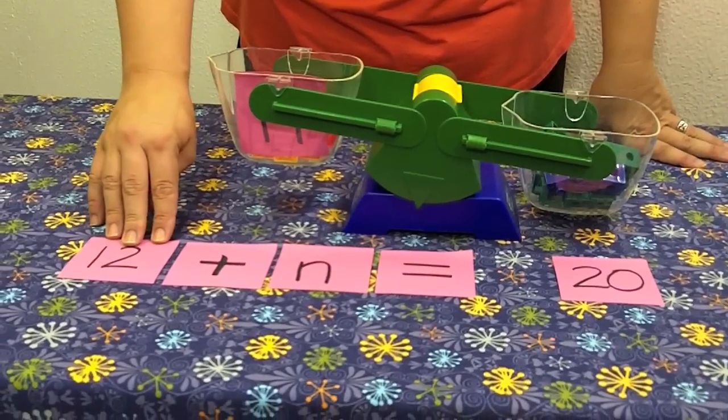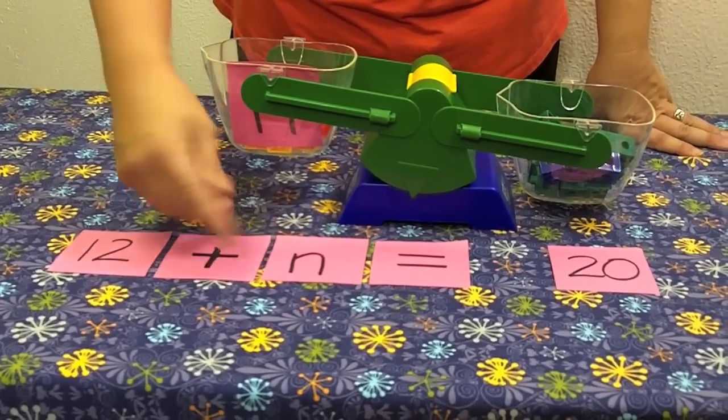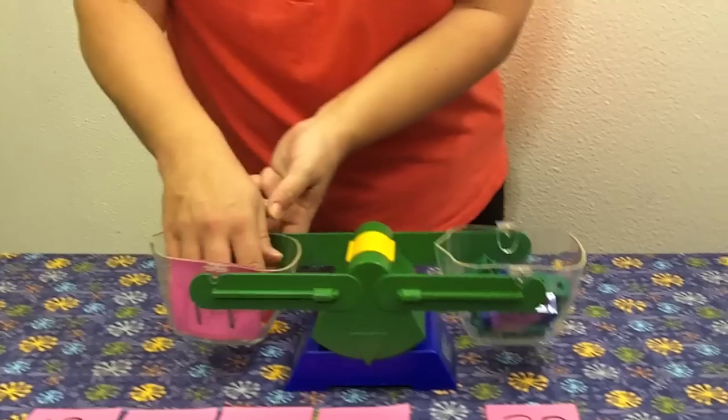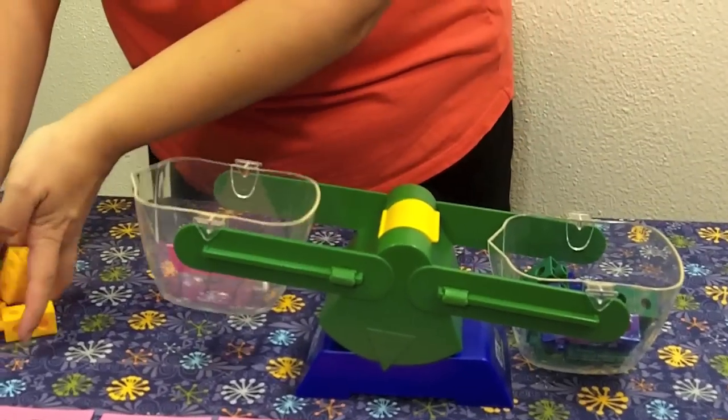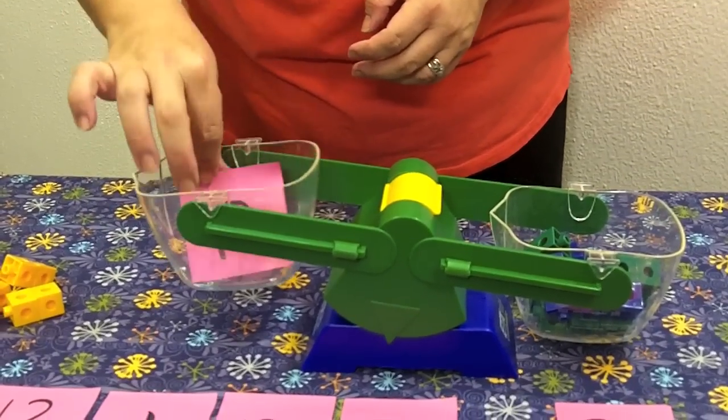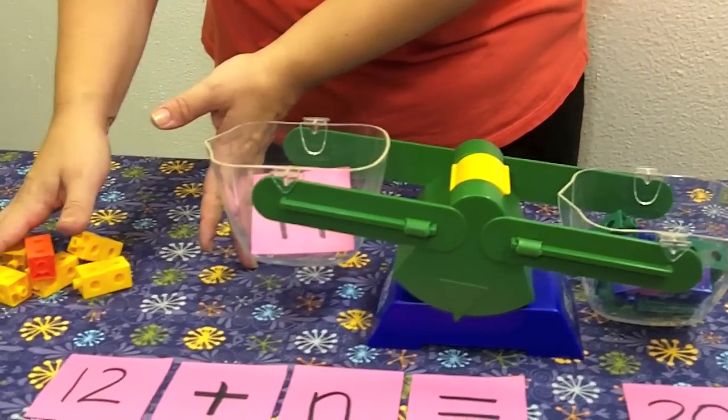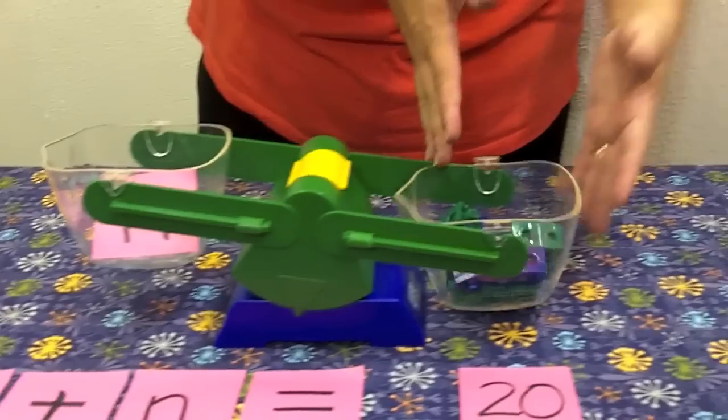This means that if I have 12 here, the only way to get n by itself is to take away 12. So I'm going to go ahead and subtract the 12 that are over here, and I'm left with just n. If I subtract from this side of the balance, I have to subtract from the other side.